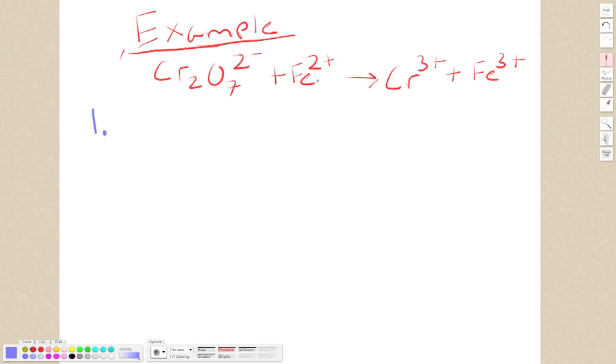We have Fe2+ yields Fe3+. Just by looking at this, we can tell that the iron actually loses an electron, therefore it is oxidized and goes up one. So our half reaction for iron will look like this: Fe2+ yields Fe3+. And this is the oxidized.